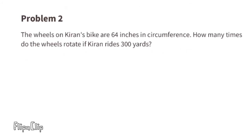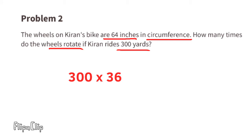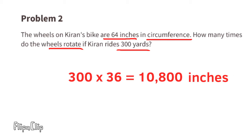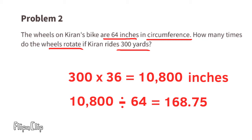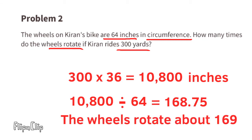Problem number 2. The wheels on Kieran's bike are 64 inches in circumference. How many times do the wheels rotate if Kieran rides 300 yards? Since there are 36 inches in a yard, we need to multiply 300 yards times 36 inches. That gives us 10,800 inches. Since the circumference of Kieran's wheel is 64 inches, we need to see how many times 64 inches goes into 10,800 inches. 10,800 divided by 64 equals 168.75. So Kieran's wheel has to rotate almost 169 times to travel 300 yards.